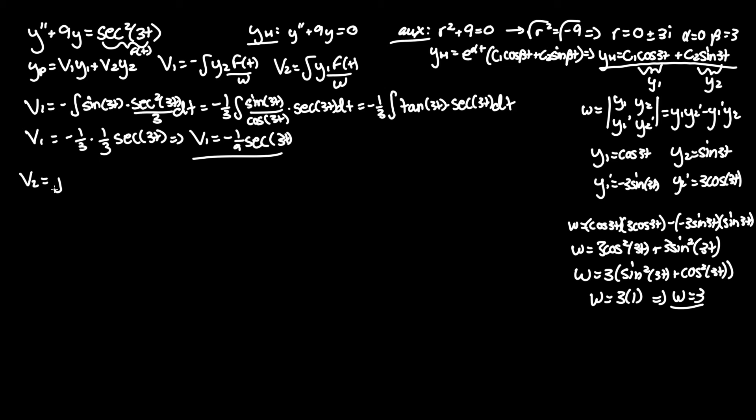For v2, the integral of y1, which is cosine 3t, times f of t secant squared of 3t dt over Wronskian of 3. Unfortunately, one of the cosine terms gets to cancel since it's cosine 3t over cosine 3t. But we are left over with just a single secant term now.